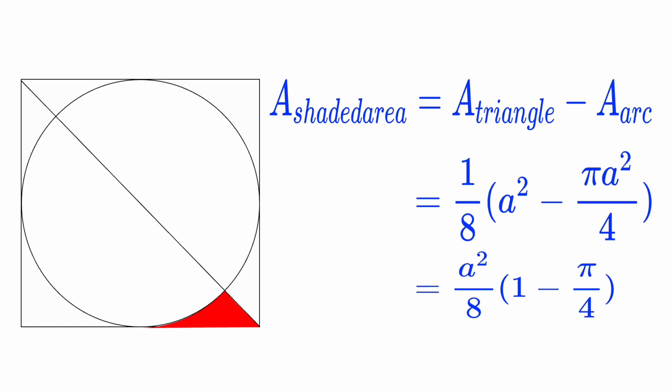And there it is. The shaded region, that thin space between the triangle and the arc, is the difference between one eighth of the square and one eighth of the circle. We broke a complex shape into familiar parts and use geometry to reveal the answer.